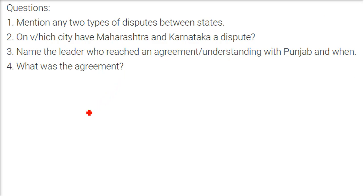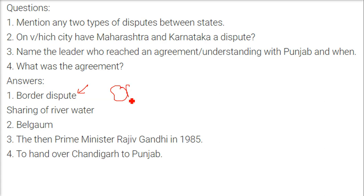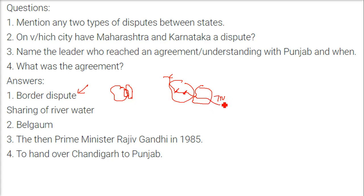Two types of disputes between states are boundary disputes and river water sharing disputes. For example, the Kaveri river passes through Karnataka first and then Tamil Nadu. Karnataka has built dams, so water is not reaching Tamil Nadu, which has a hotter climate. On the city over which Maharashtra and Karnataka have a dispute — it is Belgaum city. The leader who reached an agreement with Punjab was Prime Minister Rajiv Gandhi in 1985. The agreement was that Chandigarh, currently the capital of both Punjab and Haryana, would be handed over to Punjab.